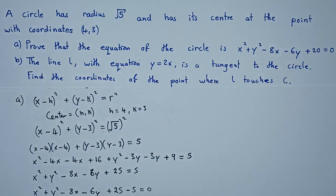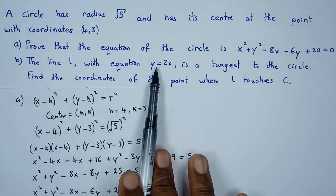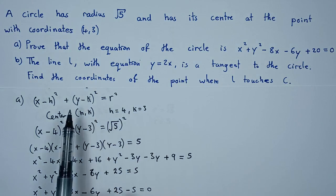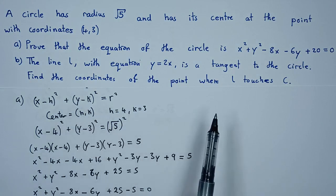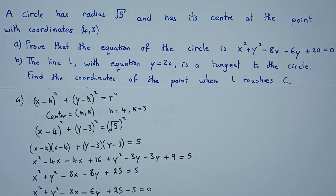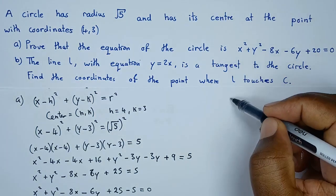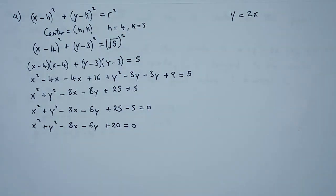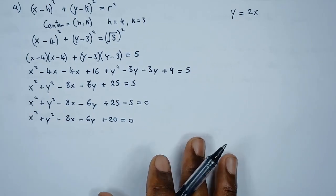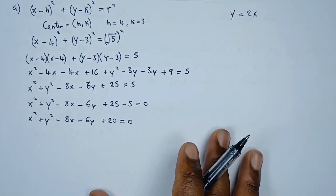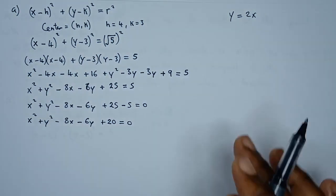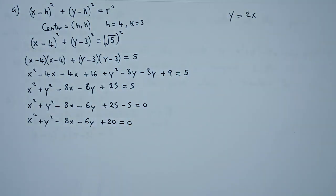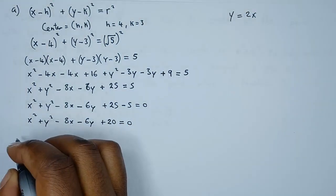For the next question, we've been told that line L is a tangent to the circle. We need to find the coordinates where the line L touches the circle. The line is y equals 2x. Since this tangent meets the circle, we find the coordinates by solving the two equations simultaneously.